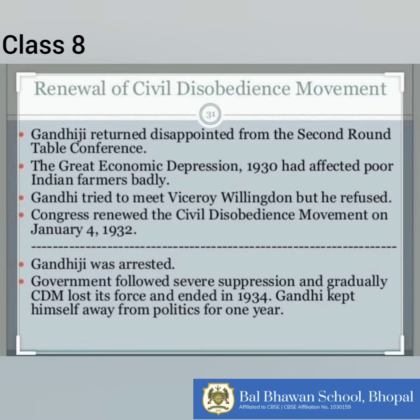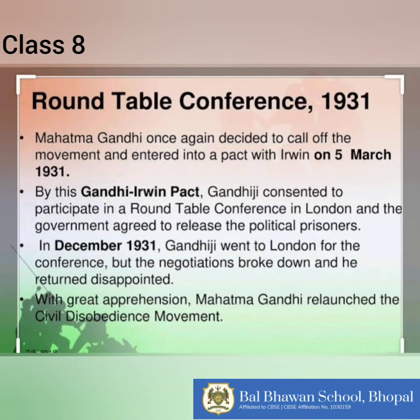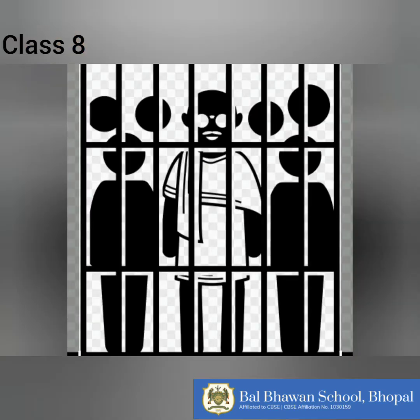The Second Round Table Conference was presided over by the British Prime Minister, Ramsay MacDonald. Mahatma Gandhi was the sole representative of the Congress. The conference was mainly devoted to looking for a solution to communal problems. The delegates of the Muslim League, the Anglo-Indians, the Sikhs, and other such groups insisted on acknowledging communal claims. The conference ended in failure and a disappointed Mahatma Gandhi returned to India. Lord Wellington, who succeeded Lord Irwin as the Viceroy of India in April 1931, was not in favour of the Gandhi-Irwin Pact. He ignored many provisions of the pact. Consequently, even before Gandhiji's return, the Congress renewed the Civil Disobedience Movement in the first week of January 1932.